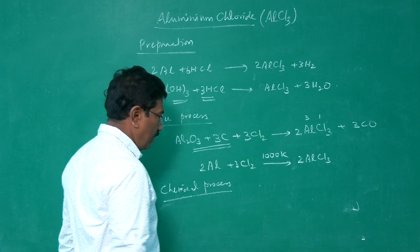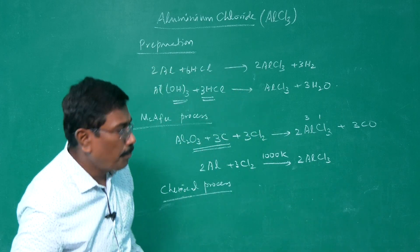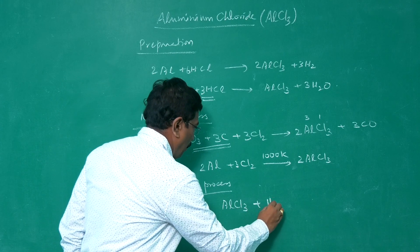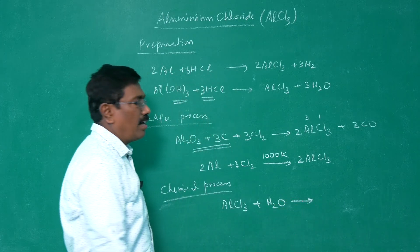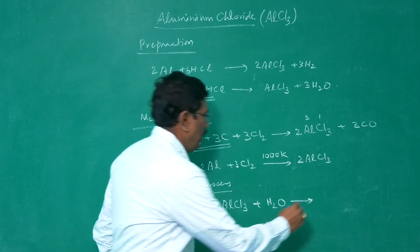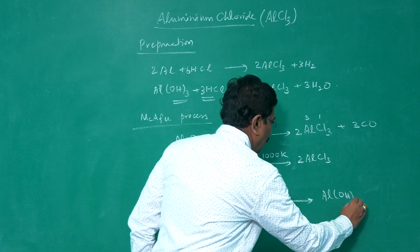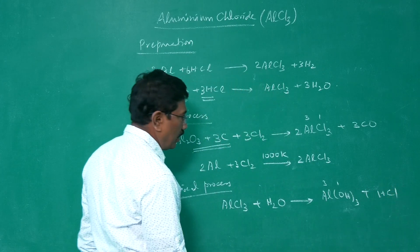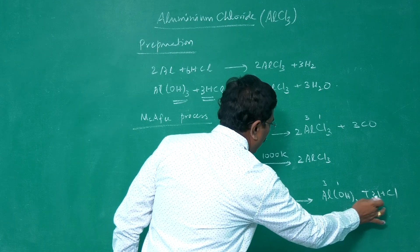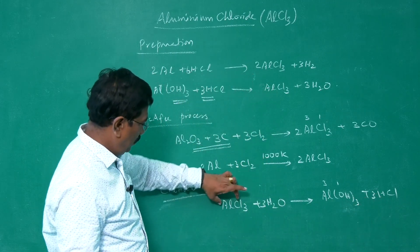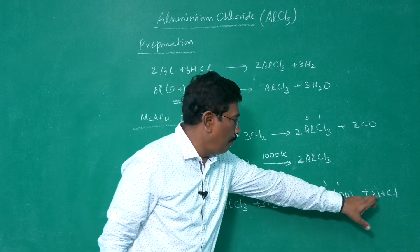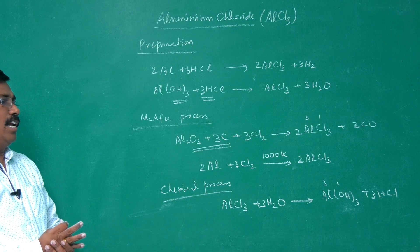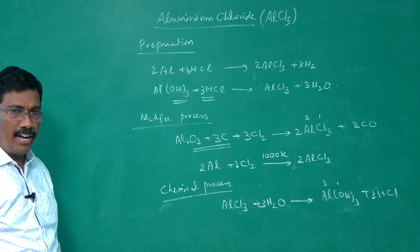Another chemical property: aluminium chloride gets hydrolyzed. Being hygroscopic, it reacts with water. When hydrolyzed with water, it forms aluminium hydroxide and HCl: AlCl₃ + 3H₂O → Al(OH)₃ + 3HCl.